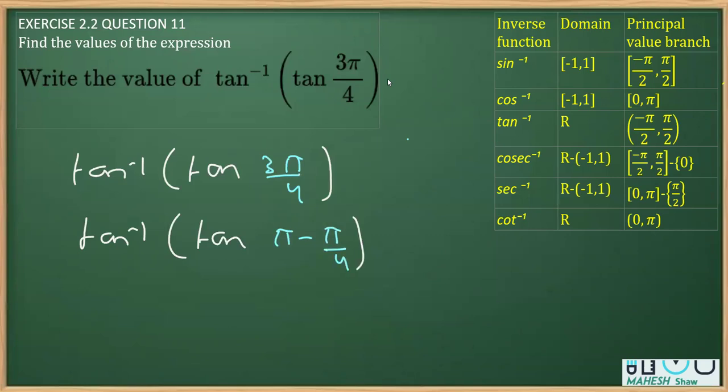Now I should keep in mind that tan of π minus θ is minus tan θ. So what we'll get here is tan inverse of tan π by 4.